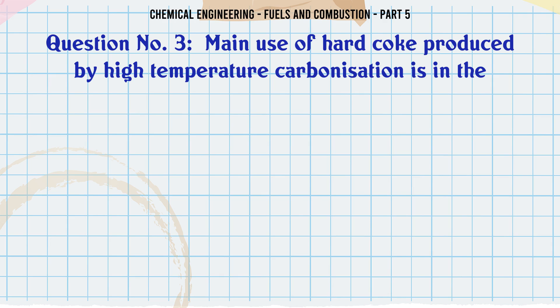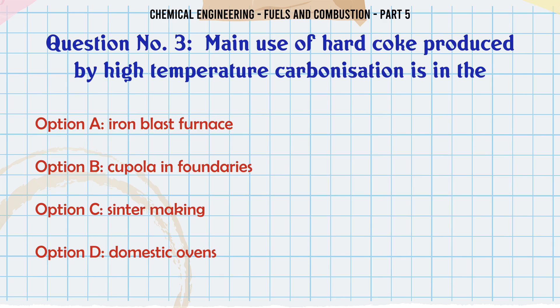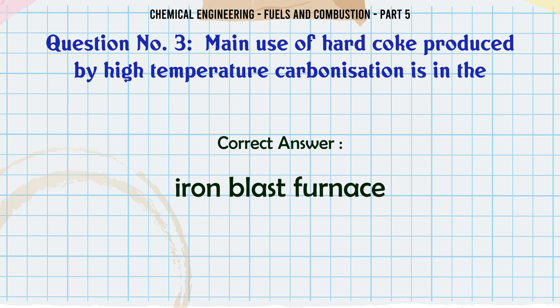Main use of hard coke produced by high temperature carbonization is in the: A. Iron blast furnace. B. Cupola in foundries. C. Sinter making. D. Domestic ovens. The correct answer is iron blast furnace.